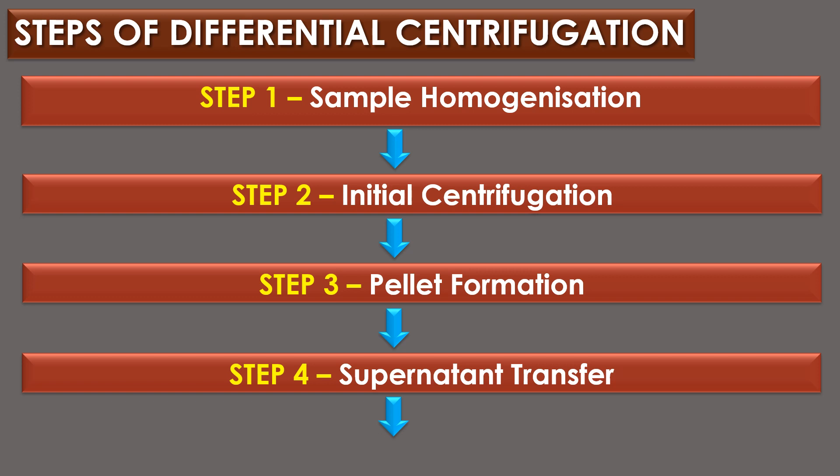Step 3 is pellet formation: as a result of the initial centrifugation, the larger and denser particles sediment and form a pellet at the bottom of the centrifuge tube. The pellet contains the separated particles, while the supernatant — the liquid portion above the pellet — contains the remaining particles. Step 4 is supernatant transfer: the supernatant, which contains smaller particles and components, is carefully transferred to a new centrifuge tube, allowing for further separation and isolation of specific particles in subsequent steps.